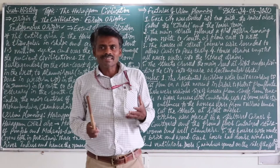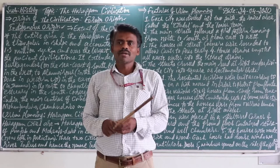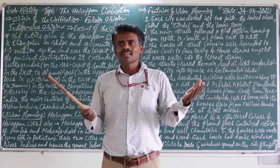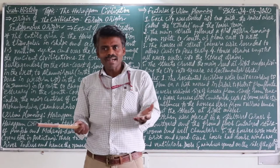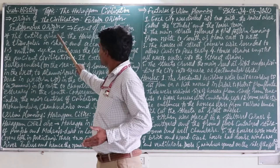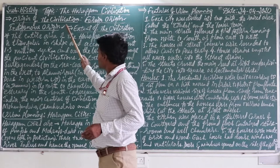If you hear the word 'origin,' what you are going to understand? Origin means the place where something started. For example, yesterday I was telling about the word 'habitat.' Habitat means the place where people used to settle or live. For example, we are Bangalore people, so our habitat is Bangalore. Likewise, origin refers to where the civilization started — that is called origin.